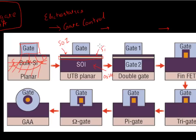You can further improve it by using another gate. You can have this thin channel and use a top gate, and also either put another separate gate or use the substrate below as a gate — and you can have a double gate device.